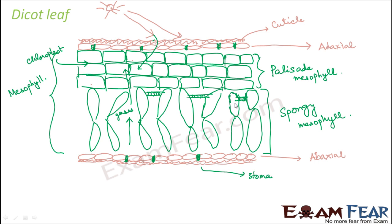So this is all about the structure of a dicot leaf. To summarize: the leaf has two layers of epidermis, a cuticle, and the main mesophyll layer which contains palisade mesophyll and spongy mesophyll. Palisade mesophyll cells are compactly arranged side by side so that more cells can be accommodated in a small space to trap more sunlight; chloroplast is also present in this layer. The spongy mesophyll below has cells arranged with a lot of spaces in between, which are used to store gases required for photosynthesis.